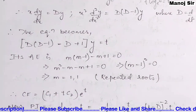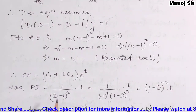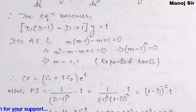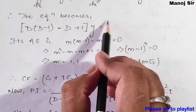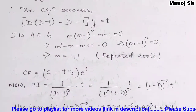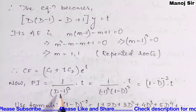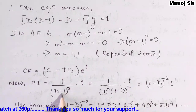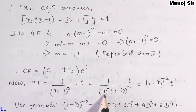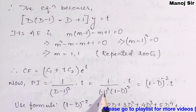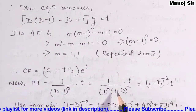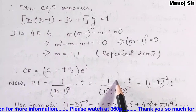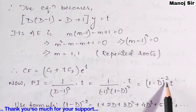Now we find the particular integral PI. We write PI equals 1/(D minus 1)² times t. The right-hand side is t, which is an algebraic term, so we need to write this in increasing powers of D. Taking negative 1 common from (D minus 1)² gives (minus 1)² times (1 minus D)², and since (minus 1)² equals 1, we get (1 minus D)^(minus 2) times t.